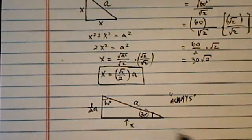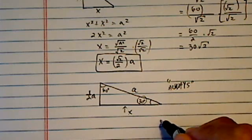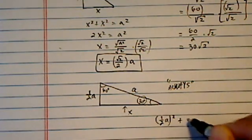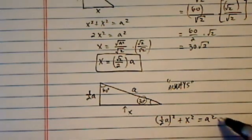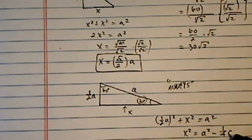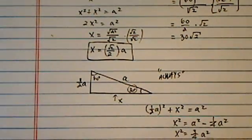And then let's find out what this longer x is. Using Pythagorean theorem, we have half of a squared plus this x squared is equal to a squared. Then x squared is equal to a squared minus a quarter a squared. So this is equal to three-fourths a squared.